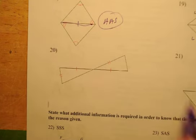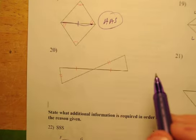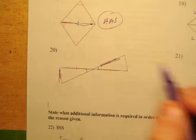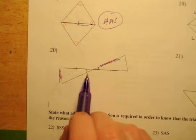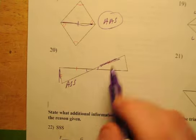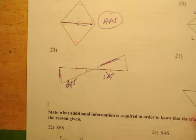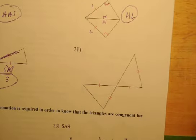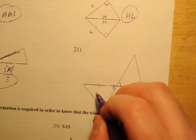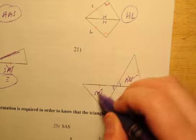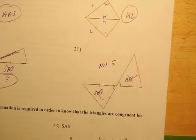Number twenty: how can this side be congruent to that side? They're not even close. One triangle gives you Angle-Side-Side and the other gives you Side-Angle-Side — those don't match up, so not congruent. In the last picture, we have vertical angles that are congruent, but again one triangle gives Side-Angle-Side and the other gives Angle-Side-Side — those don't match, so not congruent.